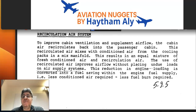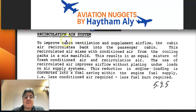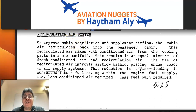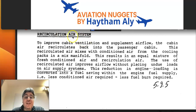The recirculation air system is used to improve cabin ventilation and supplement airflow. How does it improve cabin ventilation? We take air from the cabin, filter it, then send it to the mixing chamber where it mixes with new fresh air coming from the air conditioning packs, and then supply it again to the cabin.